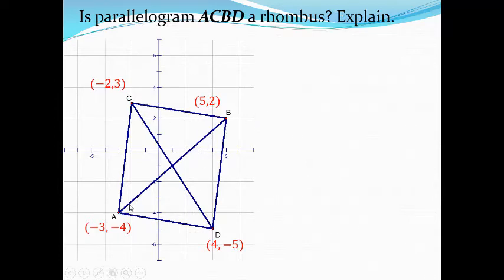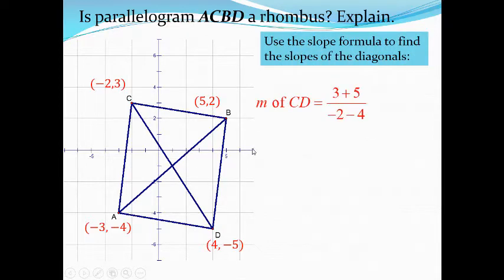Now, is parallelogram ABCD a rhombus? To check if this quadrilateral is a rhombus, we can check if the two diagonals are perpendicular. Using the slope formula, if the slopes of the two diagonals are opposite reciprocals, then the diagonals are perpendicular. Let's find the slope of diagonal CD: (3 minus negative 5) over (negative 2 minus 4) equals 8 over negative 6, which equals negative 4 over 3.